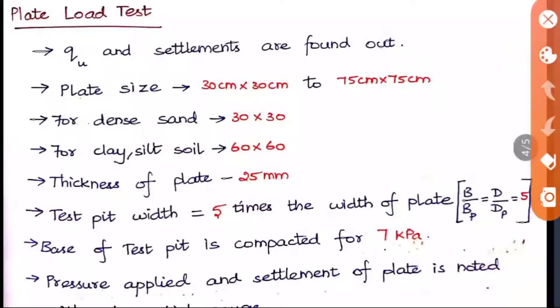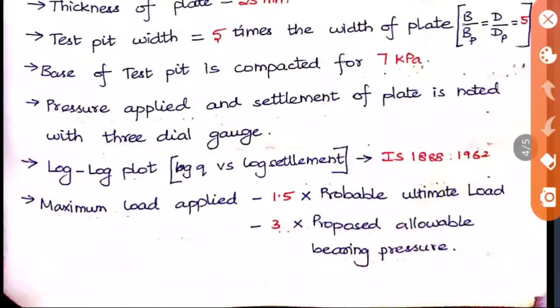The base of the test pit should be compacted for 7 kPa, then only you will get the accurate answer. The pressure applied and the settlement of the plate is noted with 3 dial gauges. Dial gauges will be fixed to measure the settlement, and also the pressure applied, because we are just giving the weight upon it and it will be only converted to pressure. Both the pressure and the settlement will be observed from these 3 gauges, and a graph also will be plotted with respect to the values.